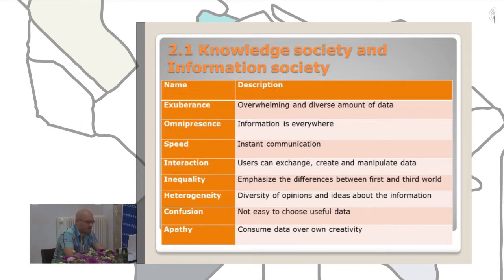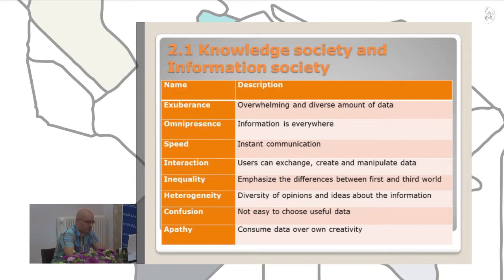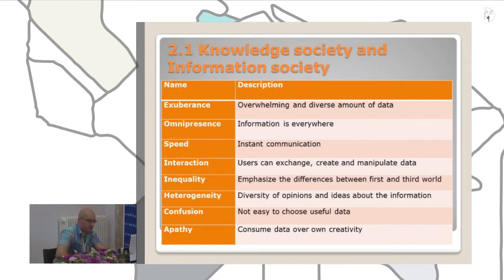Speed — instant communication around the world. Interaction — users can exchange, create and manipulate data. Inequality — emphasizing the difference between the first and the third world. Heterogeneity — diversity of opinions and ideas about information. Confusion — not easy to choose useful data. And another thing: consuming data over our own creativity. As you can see, they are not all on the right side.